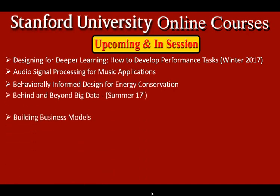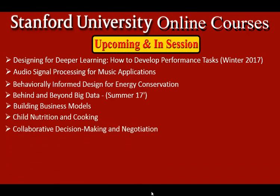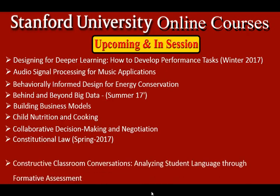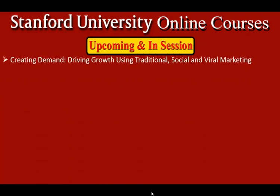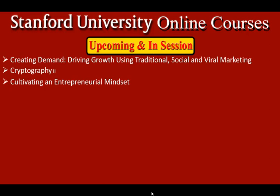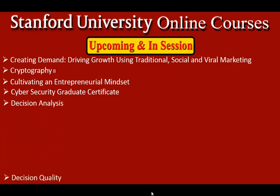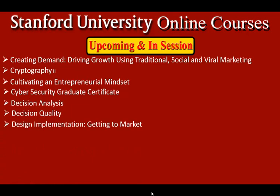Summer 2017: Building Business Models. Child Nutrition and Cooking. Collaborative Decision Making and Negotiation. Constitutional Law, Spring 2017. Constructive Classroom Conversations. Analyzing Student Language Through Formative Assessment. Converting Strategy into Action. Creating Demand, Driving Growth Using Traditional Social and Biomarketing. Cryptography 2. Cultivating an Entrepreneurial Mindset.